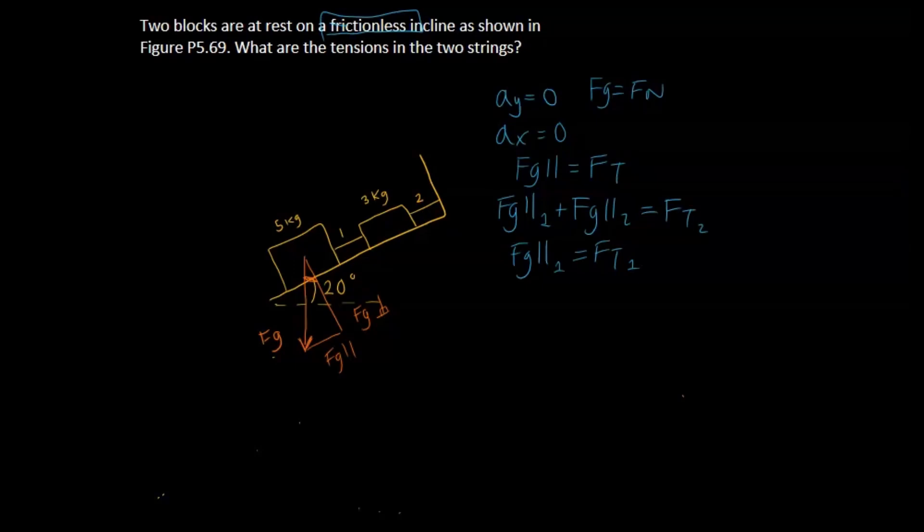So then for that, we can use trig. And in order to use trig, we need at least one of the side lengths. And one of the side lengths here is Fg. And Fg is equivalent to mass times the gravitational constant, which would be, let me plug this in my calculator, 5 times 9.8, which gives us 49 newtons. So if you were to use trig, that would just give us 49 times sine of 20, and that would give us around 17 newtons.